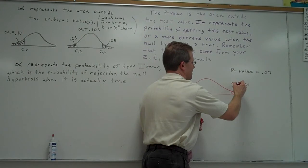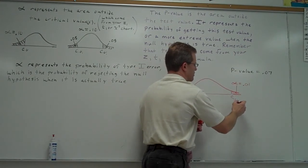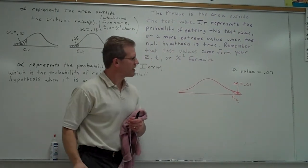Remember, alpha is the area outside of your critical value. So our critical region, this is a right tail test, has an area of 0.01.